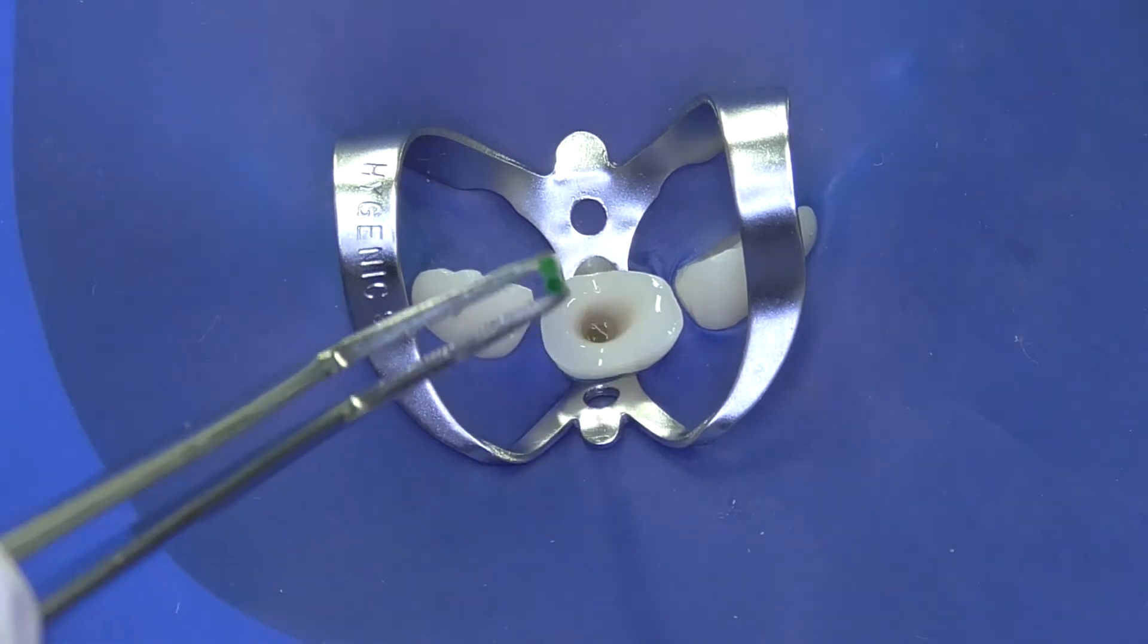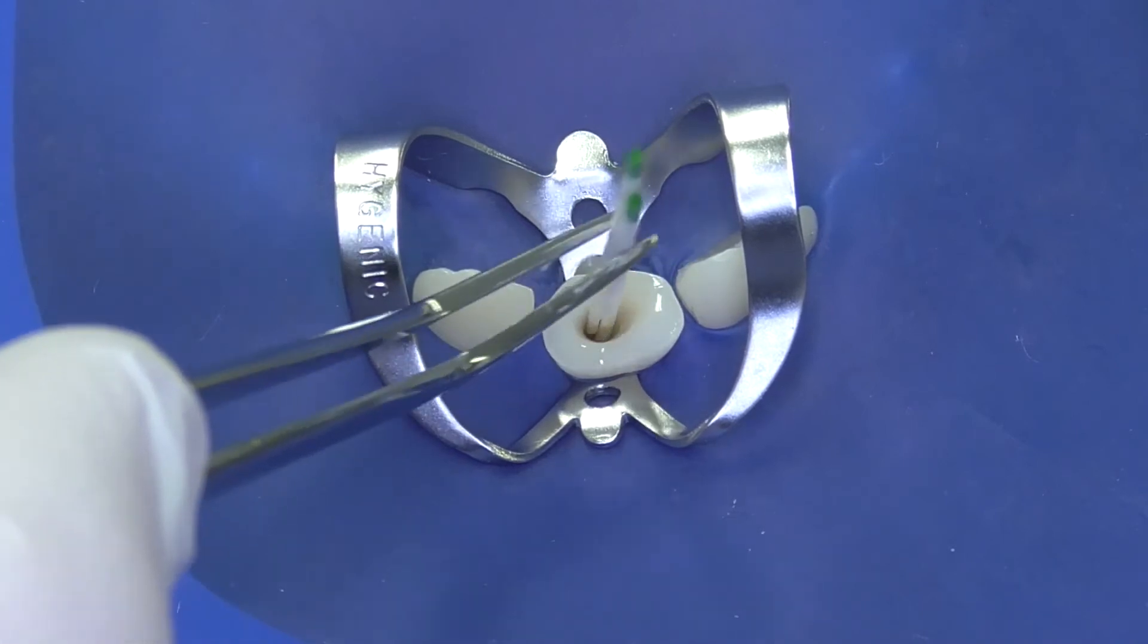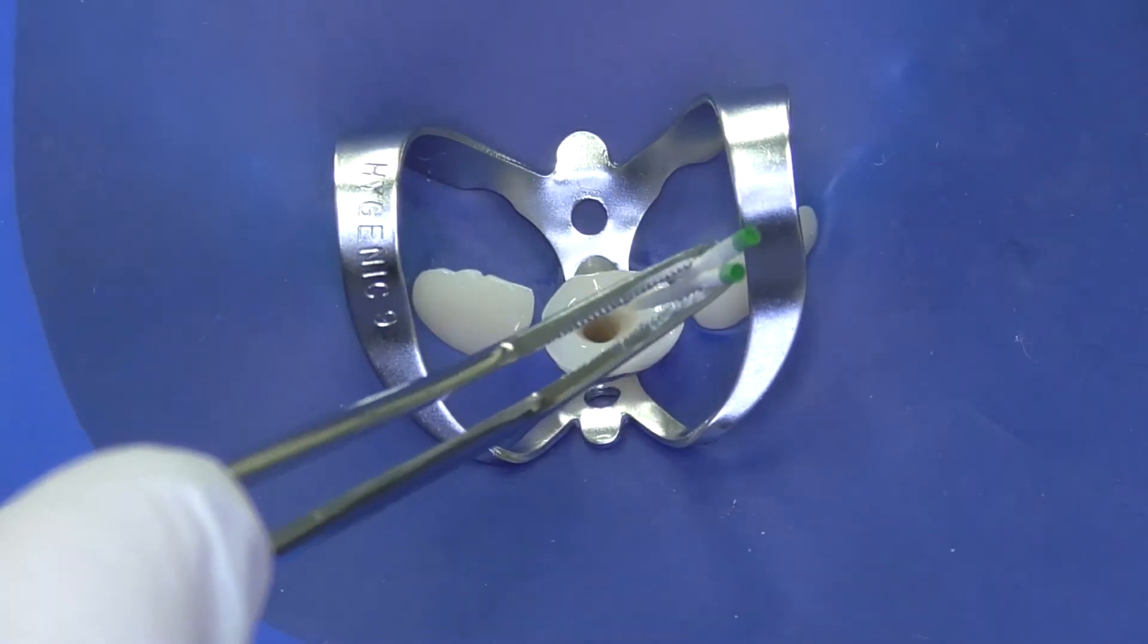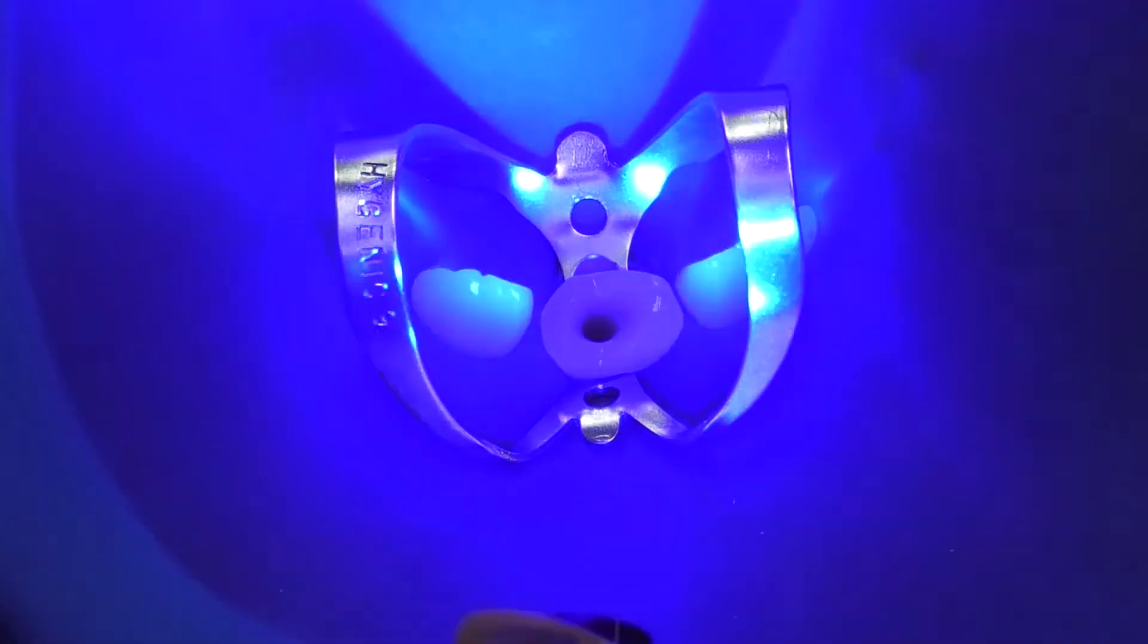Excess adhesive will be removed by paper points from the root canal. The adhesive will then be cured with light according to instructions of the adhesive.